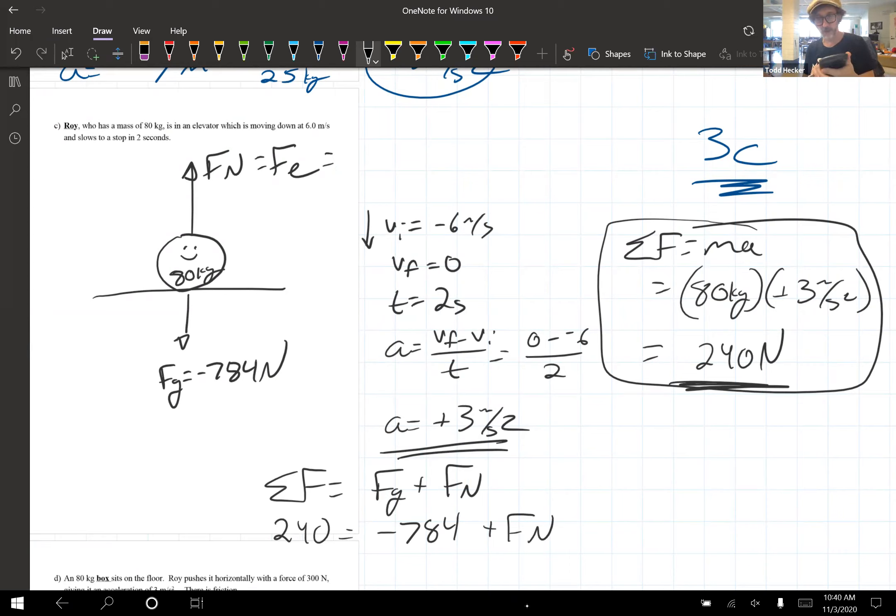Oh, stupid gorilla glue. Oh, now it's all sticky. Gross. 240 plus 784 gives you 1,024 newtons. And that's it.